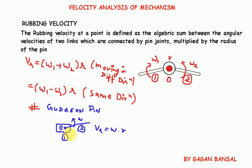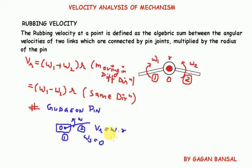This is because the slider has pure prismatic movement, that is, sliding movement, so its angular velocity is zero. Since one of the angular velocities is zero, the formula (omega one plus omega two) into r reduces to simply omega into r for the rubbing velocity at the gudgeon pin.